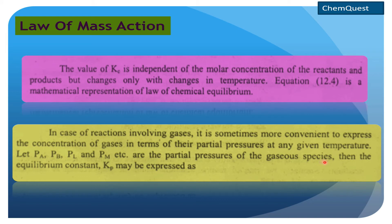For example, pA, pB, pL, and pM are the partial pressures of gaseous species. Then the equilibrium constant Kp کو ہم کس طرح represent کریں گے؟ اگر A, B, L اور M gaseous species ہیں تو p partial pressure consider کریں گے: pA is partial pressure of reactant A, pB is partial pressure of reactant B, pL is partial pressure of product L, and pM is partial pressure of product M.